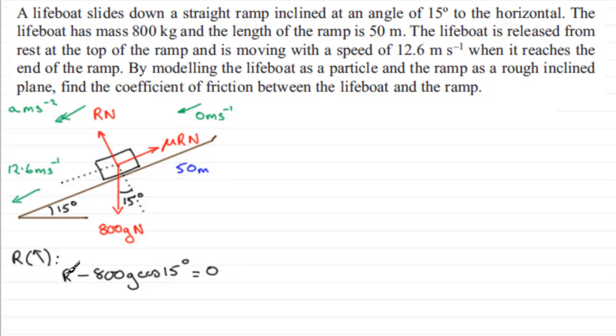All we've got to do is rearrange this to get R. If I add 800g cos 15 to both sides, R equals 800g cos 15 degrees. Make sure your calculator is in degrees mode rather than radians mode. You should find you get 7572.858 and so on, taking g to be 9.8. That's measured in newtons. So we've got our reaction.